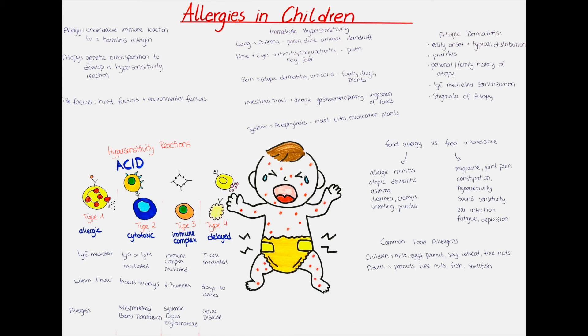Anaphylaxis can be divided into two major groups. The IgE-mediated form, which is the true anaphylaxis, requires an initial contact for the sensitization of the immune system. The coating of the mast cells and basophils by IgE and the sudden explosive release of chemical mediators occurs upon repeated contact to the allergen.